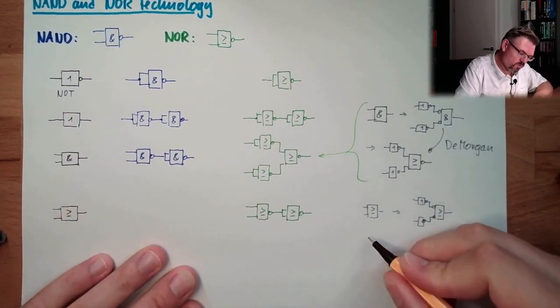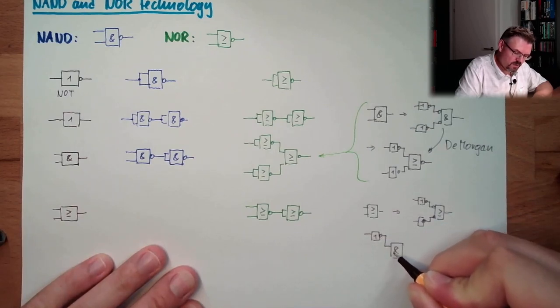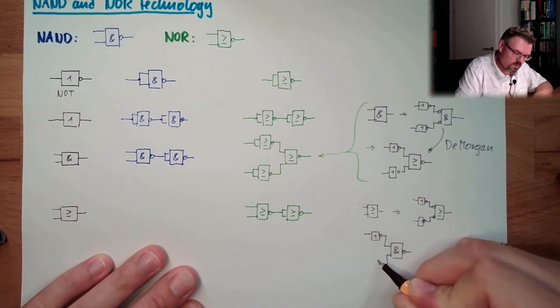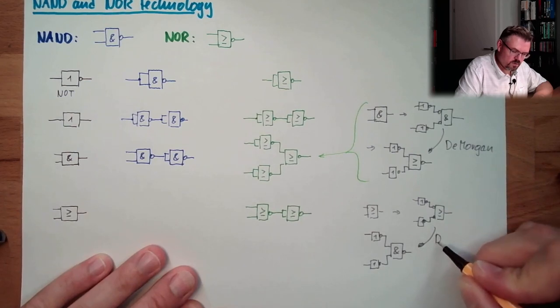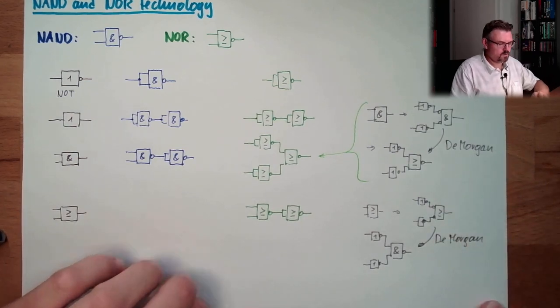Yeah? So, again, the Morgan. We have, again, here this one NOT. And here we have already an AND. Here, again, we have the Morgan. NAND. All right? This is actually what we are using here.